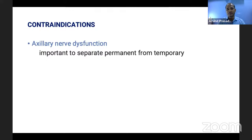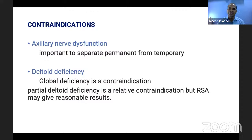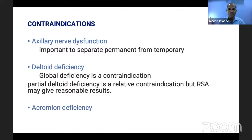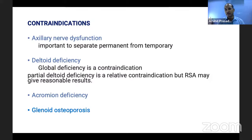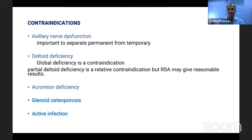Contraindications for reverse shoulder arthroplasty include: axillary nerve dysfunction — it is important to distinguish temporary from permanent, especially in trauma cases. Global deltoid deficiency is a contraindication, though some surgeons report good results even in partial deltoid deficiency. Acromion deficiency — where the deltoid originates — is also a contraindication. Significant glenoid bone stock problems such as osteoporosis or osteopenia are contraindications, as is active deep infection.